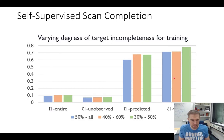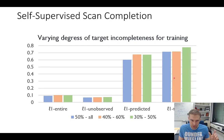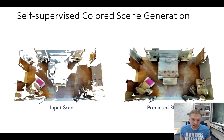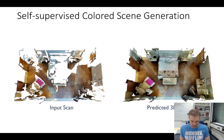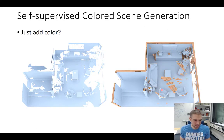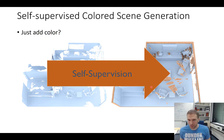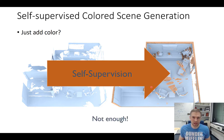We thought about pushing this further: can we add color at the same time and not just predict geometry? The idea was to have the input scan and predict the 3D scene with color. We thought this should be easy, tried it two weeks before the CVPR deadline — but just adding color didn't work at all. One reason was that color has higher resolution and didn't fit well with the geometry representation.